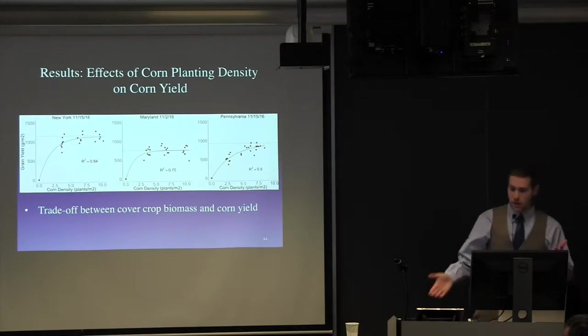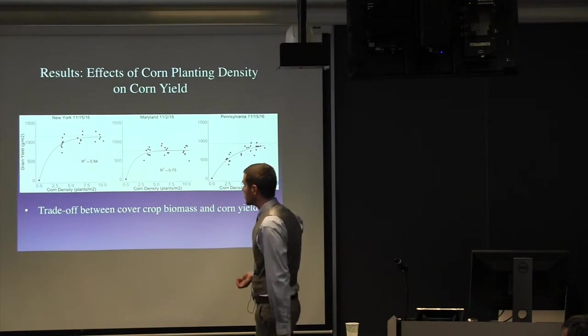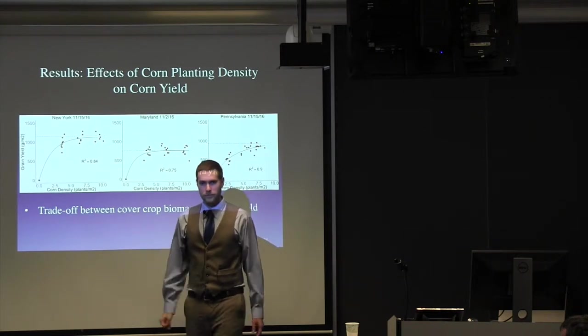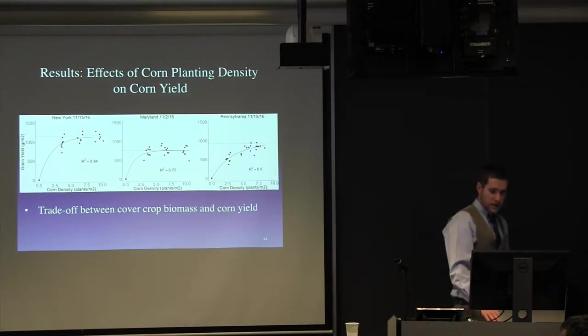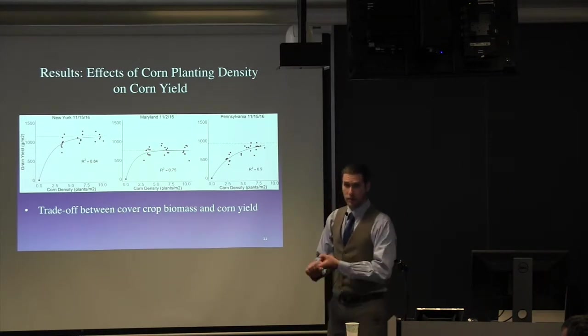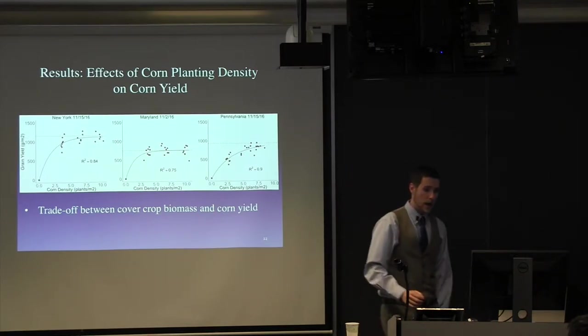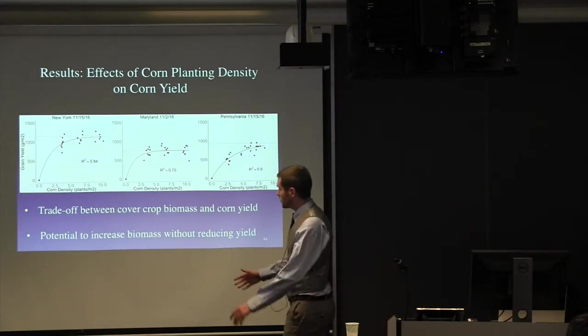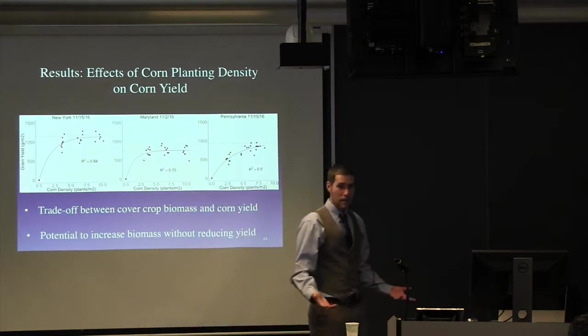So, the takeaway from this is that there is a bit of a tradeoff between cover crop biomass and corn yield. So, yeah, you get the most biomass when you don't plant corn, but farmers need to plant corn. So, there's a tradeoff. But I think based on these data, which I should repeat, this is one year, and this was a drought year, and this was using flexier corn seed. But in that context, I think there really is a potential to find the equilibrium between a little bit of a lower planting density to maximize cover crop biomass.